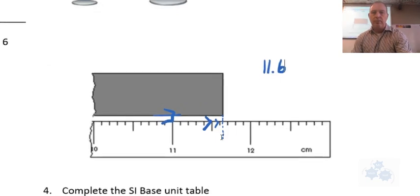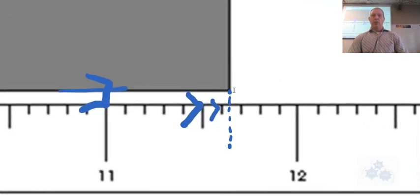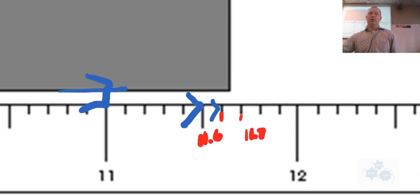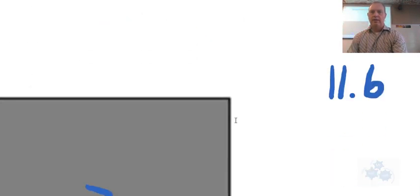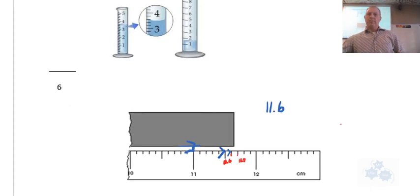Now, if I zoom in here, we don't know exactly where the end of this metal strip lands, but it lands somewhere between 11.6 and 11.7, right? 11.6 right here and here is 11.7. So we know it lands in between there somewhere. So I can make a guess on one more digit. So I'm going to go 11.6.